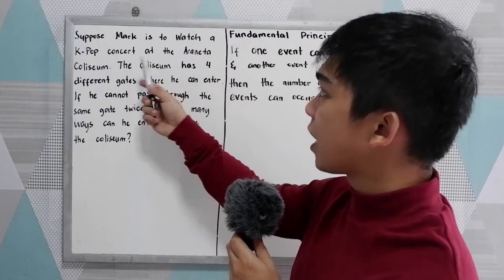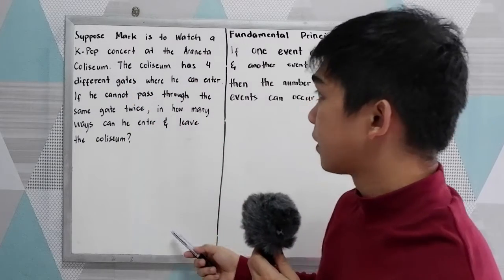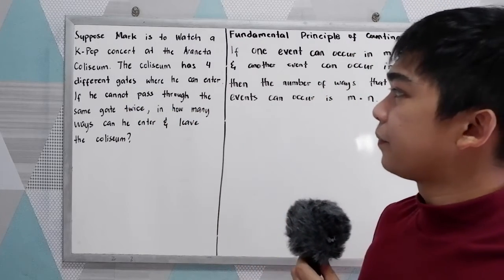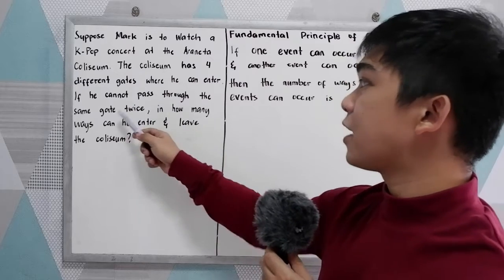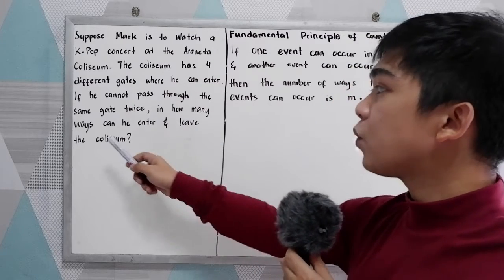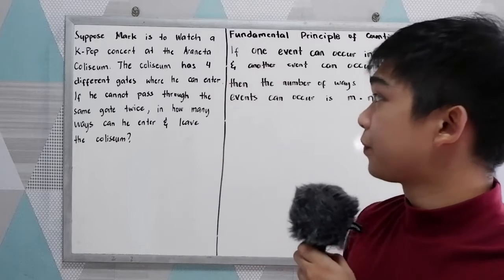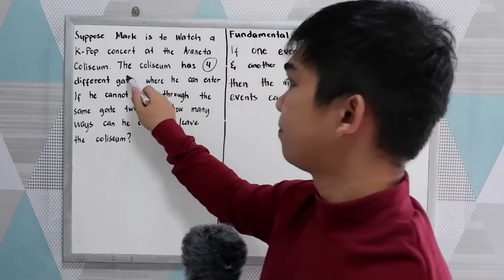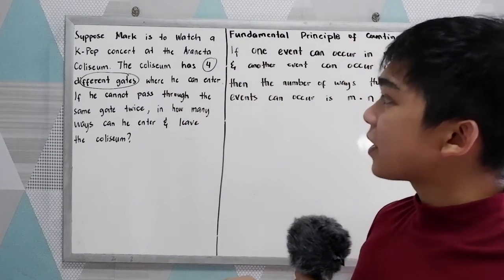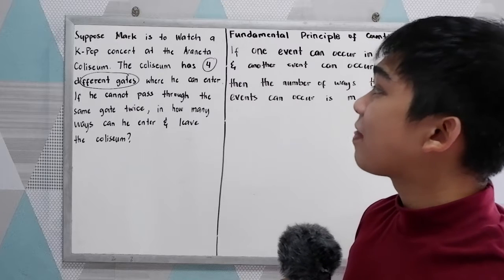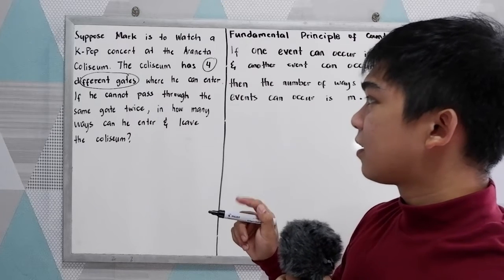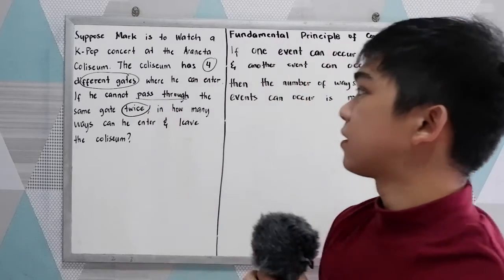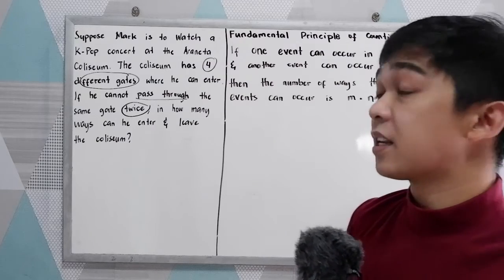Suppose Mark is to watch a K-pop concert at the Araneta Coliseum. The Coliseum has four different gates where he can enter. If he cannot pass through the same gate twice, in how many ways can he enter and leave the Coliseum?